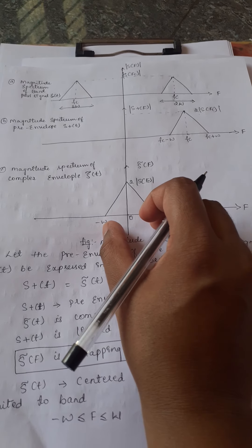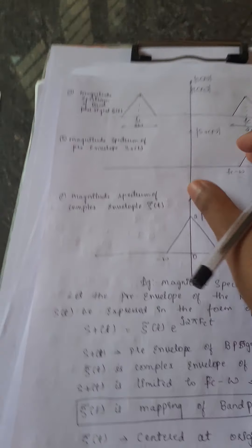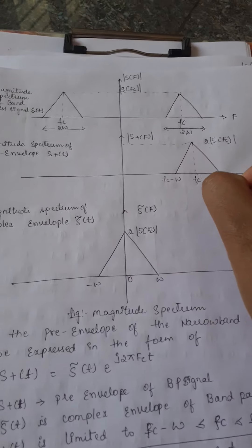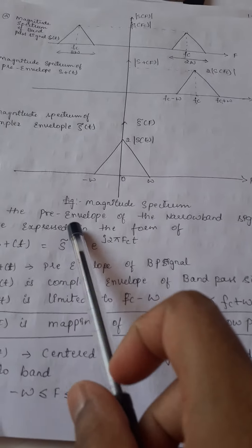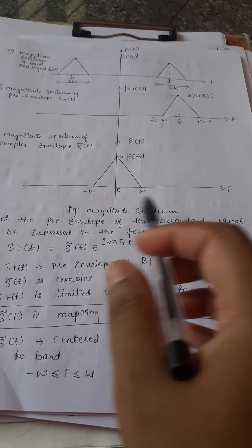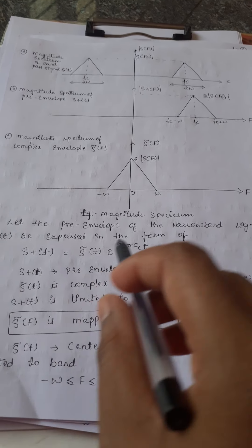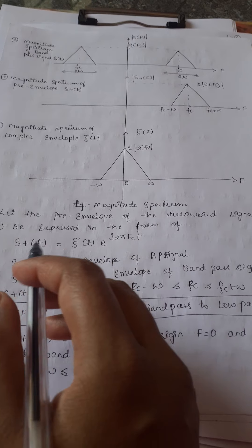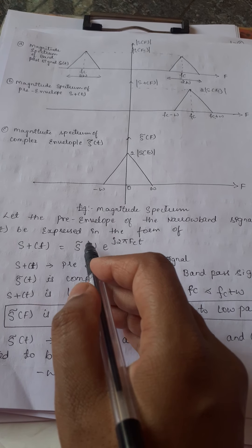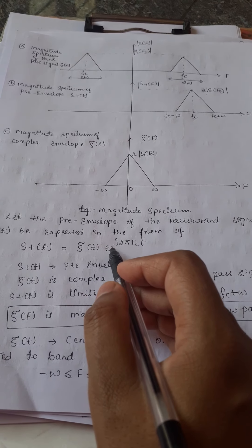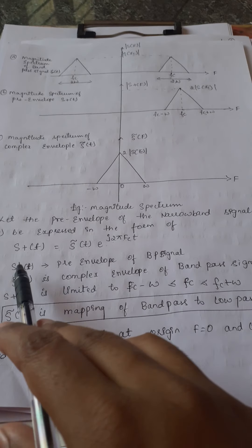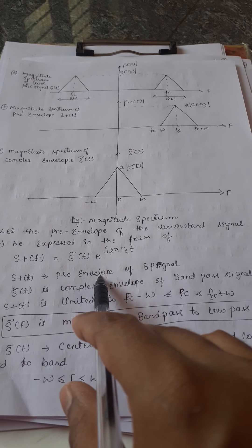For the complex envelope signal, the frequency range is from −Ω to +Ω, whereas for the pre-envelope signal, the frequency range is from FC−Ω to FC+Ω. Now consider the pre-envelope of the narrowband signal. The narrowband signal S(T) can be expressed in the form: S⁺(T) = S̃(T) · e^(j2πFC·T).